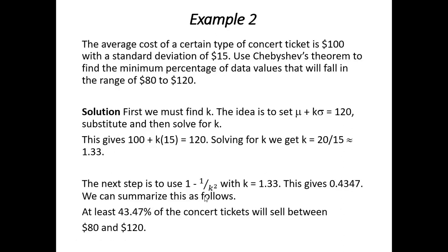Example 2. Suppose we know that the average cost of a certain type of ticket is $100 with a standard deviation of 15. Use Chebyshev's theorem to find the minimum percentage of data values that will fall in the range of $80 to $120.